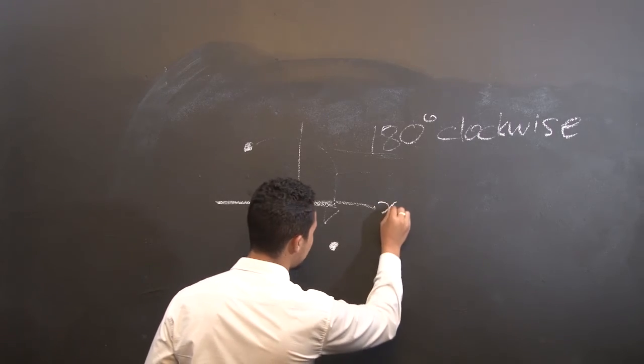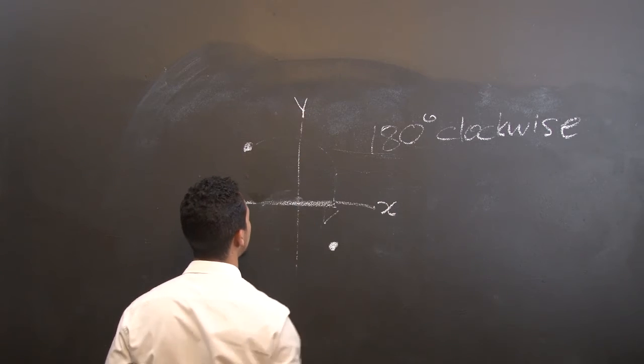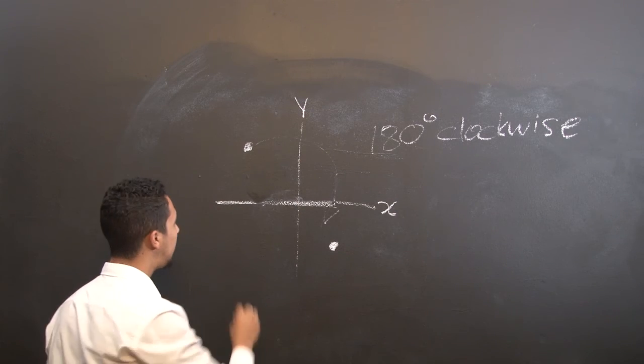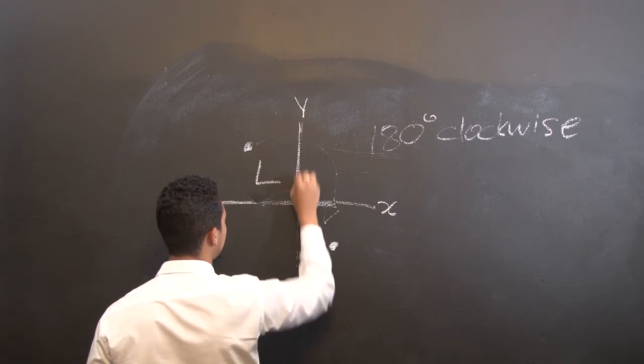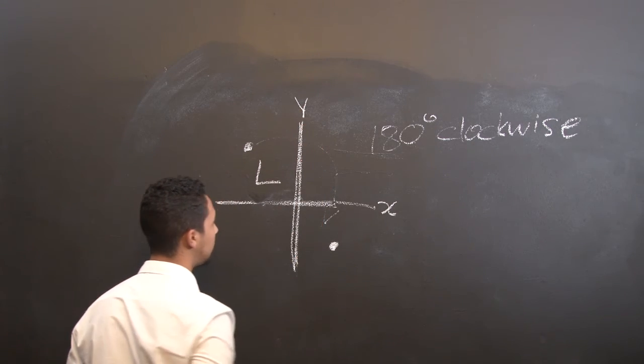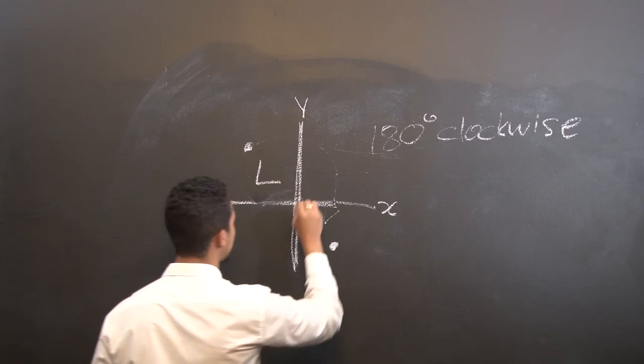Remember, this is your x-axis and this is your y-axis. If you are asked to reflect an L about the y-axis, your L will look like this.